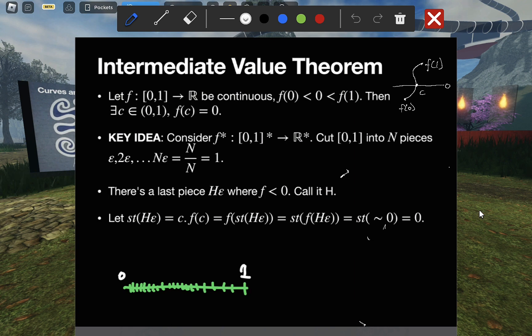Specifically, look at the bottom left, where the numbers zero and one are written on a green line with lots of tick marks on it. The idea is that we can cut this interval into N pieces. And because N is some fixed infinite integer, and I had already given a name to its reciprocal,